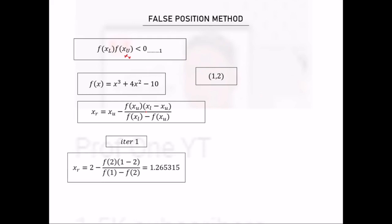The lower bound is 1 and the upper bound is 2. We substitute 2 into the function: 2³ + 4(2²) − 10 to get the function value. Then we compute 1 minus 2 over the function of 1 minus the function of 2. At the end, we get xr equal to 1.26315.